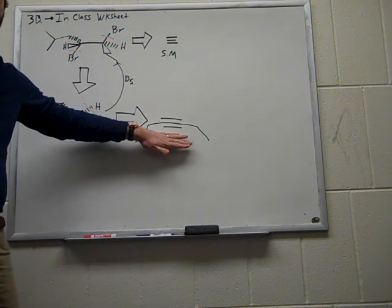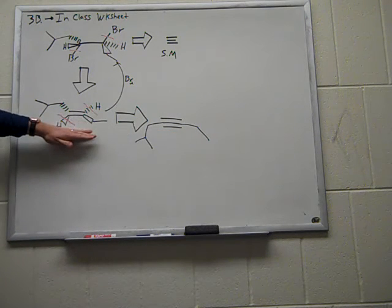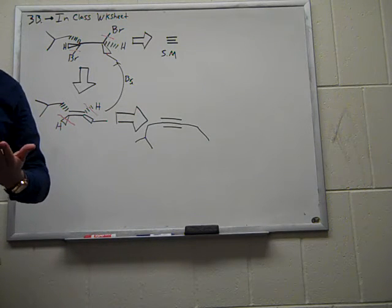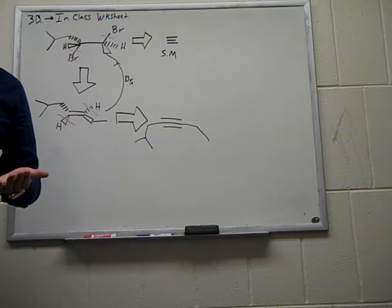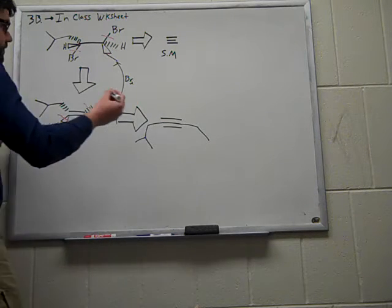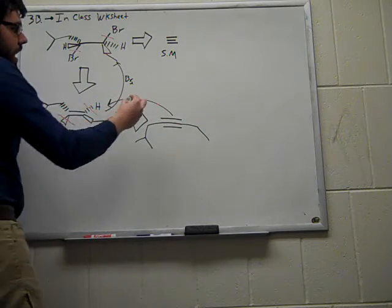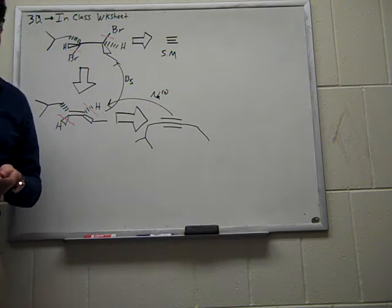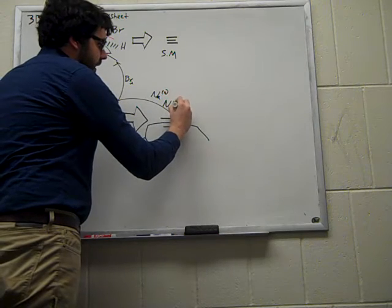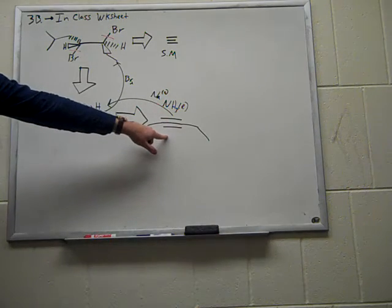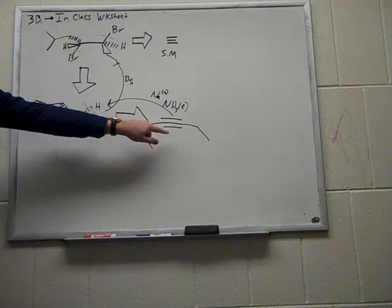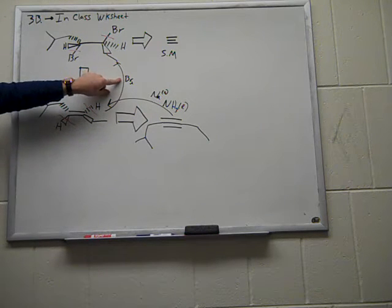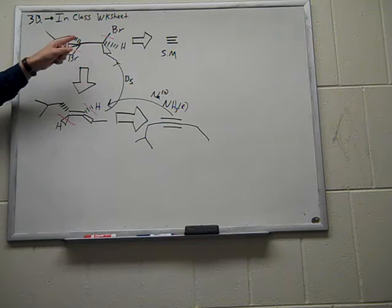So from this alkyne, we can envision doing a partial reduction to end up forming this trans-alkene. So if we remember from our work with alkynes, to do a partial reduction of an alkyne in a trans manner, we need to use what's called a dissolving metal reduction. Namely, we would treat this alkyne with metallic sodium, and I've just shown that sodium in zero oxidation state in a solvent of liquid ammonia shown there. So what this winds up doing is providing the trans-alkene, which when subjected to an anti-addition of bromine yields our following product.